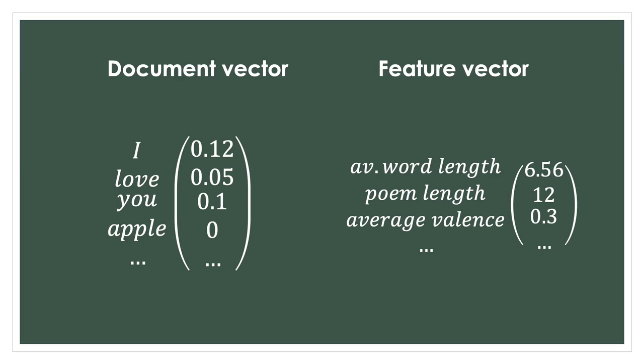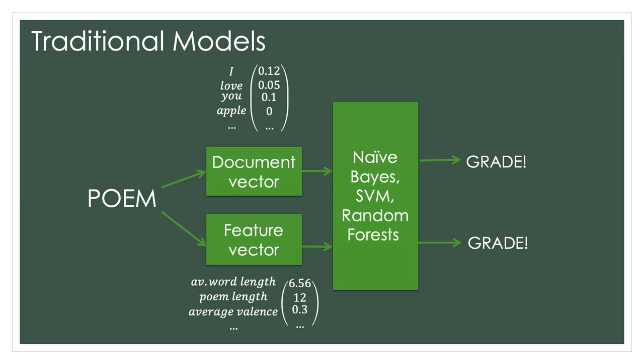We attempted two different ways of representing our poems. The document vector approach involves encoding a poem as a long vector, where each entry represents a frequency score for each word. The feature vector method involves using various features such as average word length and valence. We then passed these poems into various traditional classification algorithms like naive Bayes, SVM, and random forests. We found that the document vector approach performed slightly better, but it was still not great.